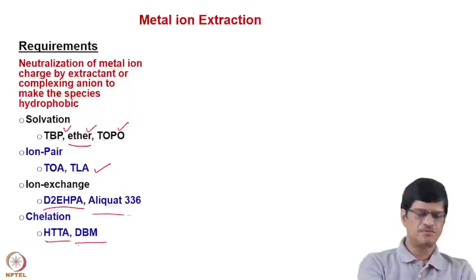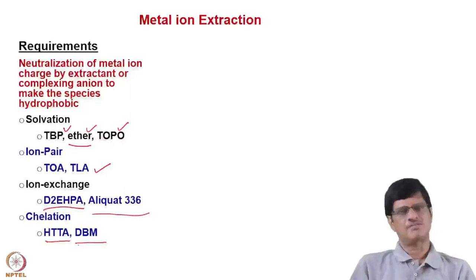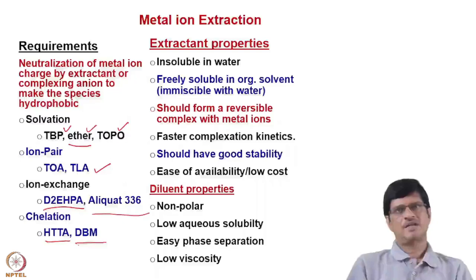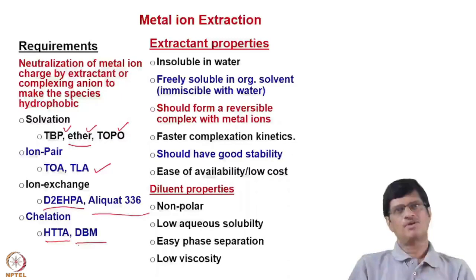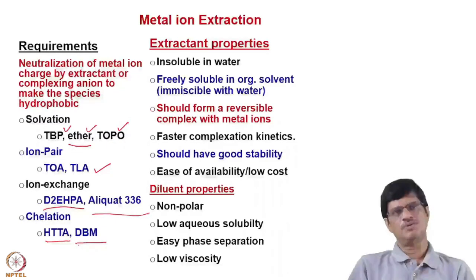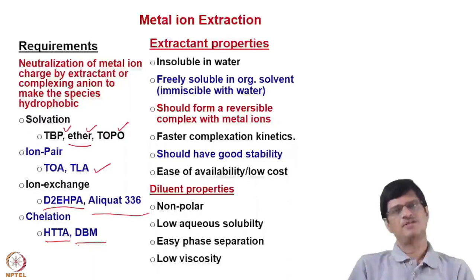Aliquat 336 operates by anion exchange, where the chloride part of the extractant is exchanged with an anionic complex. Regarding extractant properties, they should be insoluble in water and freely soluble in the organic solvent — this is the prime requirement, otherwise the complex will remain in the aqueous medium. Some extractants like crown ether or acetylacetone have good aqueous solubility, but the major amount of the complex still partitions into the organic phase, achieving the extraction.